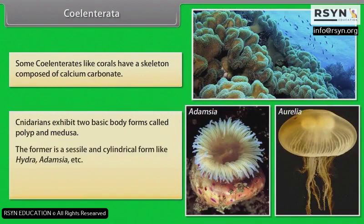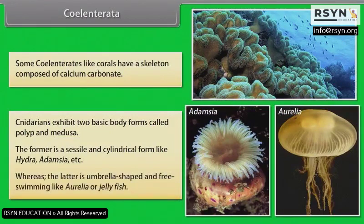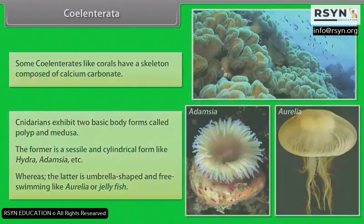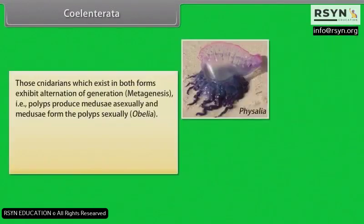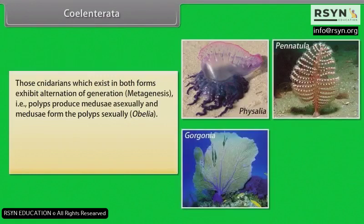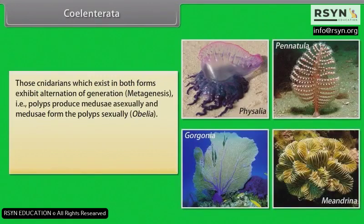The polyp is a sessile and cylindrical form like hydra, adamsia, etc., whereas the medusa is umbrella-shaped and free-swimming, like aurelia or jellyfish. Those cnidarians which exist in both forms exhibit alternation of generation, i.e., metagenesis — polyps produce medusae asexually and medusae form the polyps sexually. For example, obelia.